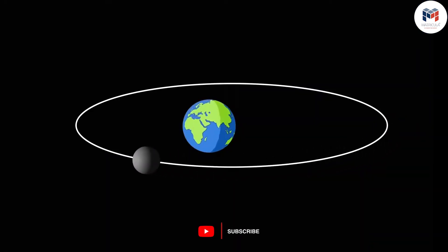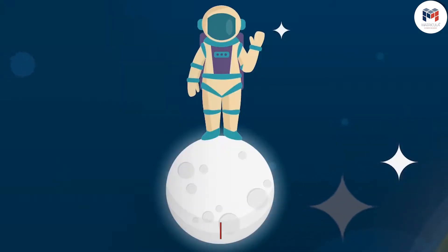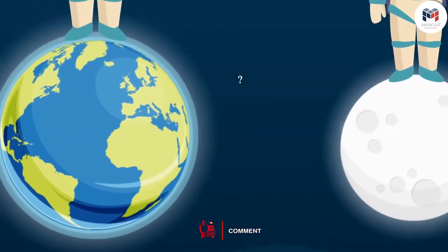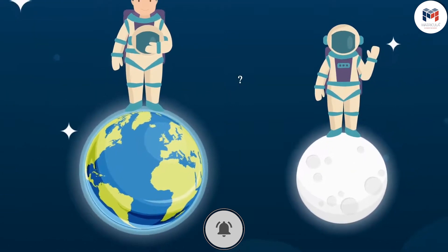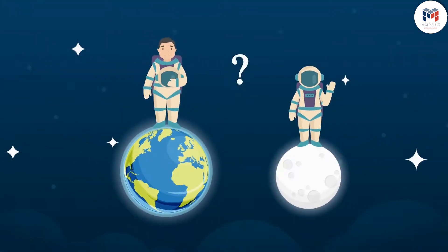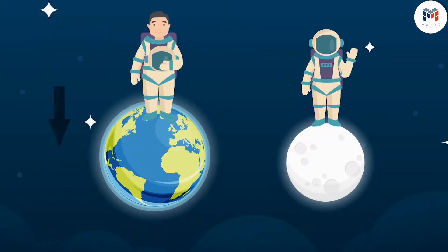Now, let's take another example and see how the weight of an object varies on the moon. Will the object be heavier or lighter on the moon compared to when it was on the earth? The weight of an object on the earth is the force with which the earth attracts the object. Similarly, the weight of an object on the moon is the force with which the moon attracts the object.